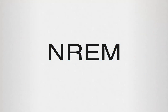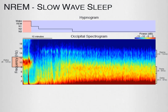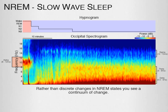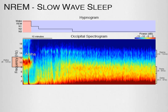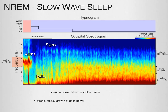Here's an example of classic non-REM sleep, where the subject is in N1, transitions to N2, and then N3. In the spectrogram, rather than discrete changes in non-REM states, you see a continuum of change. At the start, you have the eyes-closed alpha of wake, which disappears once the subject falls asleep. What you observe for the rest of non-REM is a strong, steady growth of delta power. After delta increases a bit, you start to see sigma power, where spindles reside.